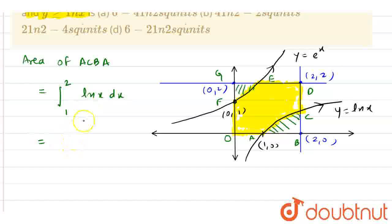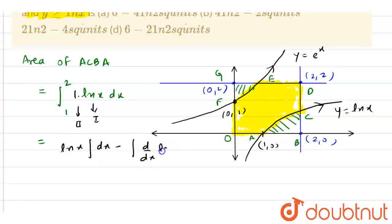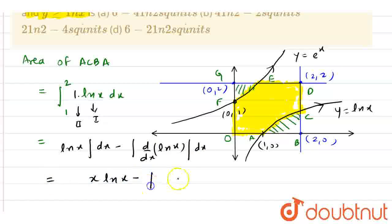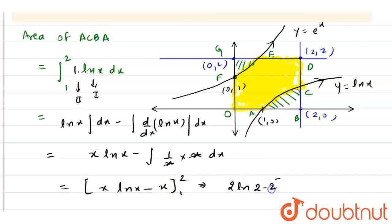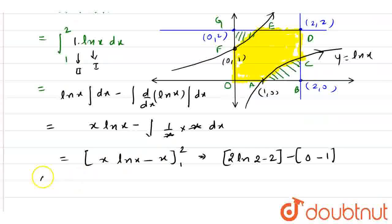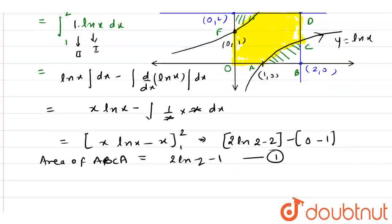Here I am going to use integration by parts. That is, ln x is my first function and 1 is my second function. So we have ln x times the integration of dx, minus the differentiation of ln x times the integration of dx. Integration of dx is x. Differentiation of ln x is 1/x, and integration of dx is x — so x gets cancelled out. My final answer here is x·ln x minus x, with limit 1 to 2. Putting in the limits: we have 2·ln 2 minus 2, minus (1·ln 1 minus 1), which gives 2·ln 2 minus 1. This is equation 1.